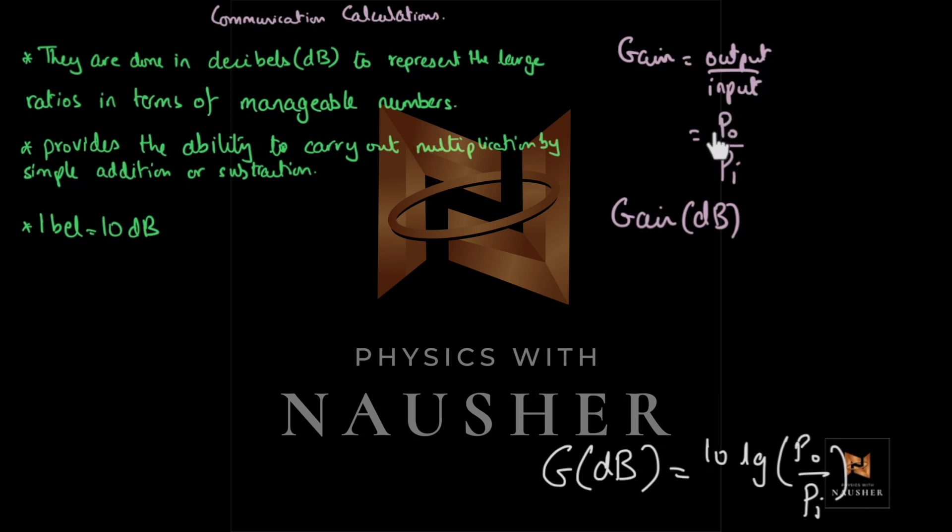And what's the difference? All you have to do is, you have to calculate P output over P input. You have to take the log of P output over P input. And then you multiply that with 10. And that is your gain in decibels.